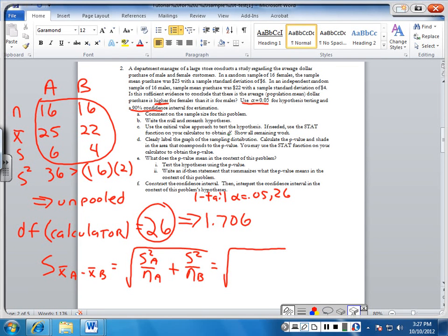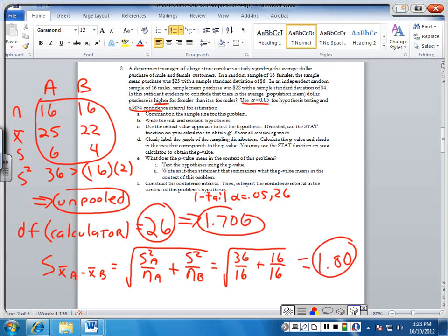So we take the variance. Now this is the 36 divided by the sample size for that group, plus the variance of the second group divided by its sample size. And that comes out to be 1.80. So we'll need to keep these numbers and this idea. And then we get those simply by knowing whether or not the variances should be pooled.